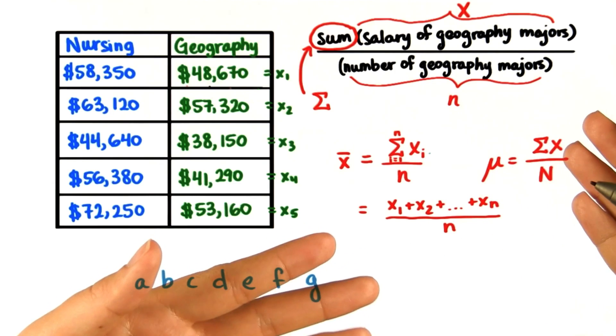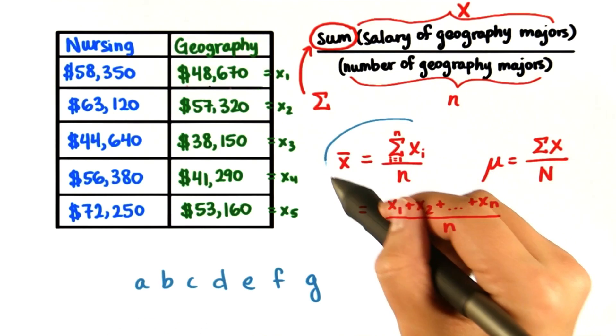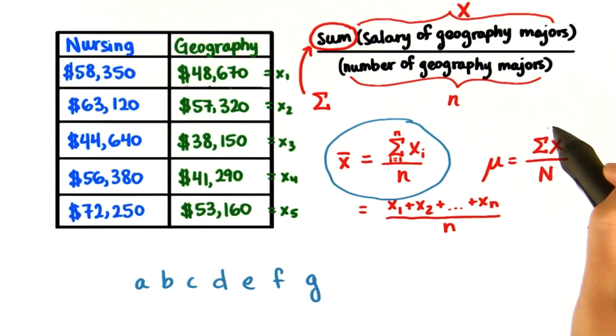Mathematics is a way of thinking, and it has evolved over thousands of years. And the way we symbolize these thoughts has evolved with it. This statistical notation is short-hand instructions that tell us what to do.